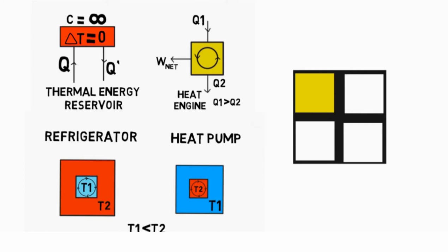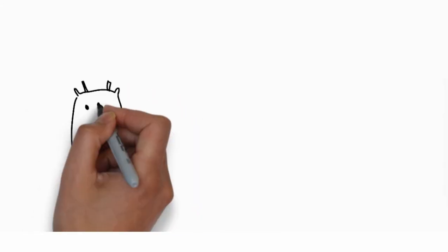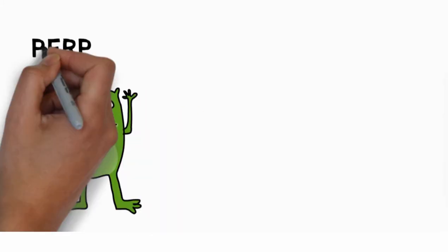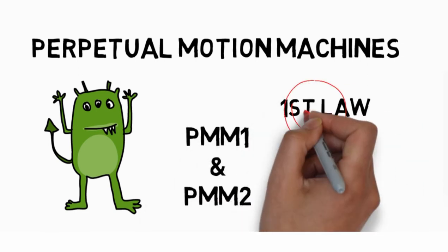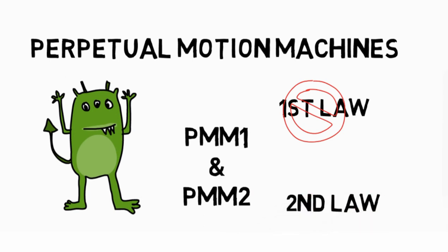The next two prerequisites are a kind of fictitious machines called perpetual motion machines, one and two, that violate the first and the second law of thermodynamics respectively.